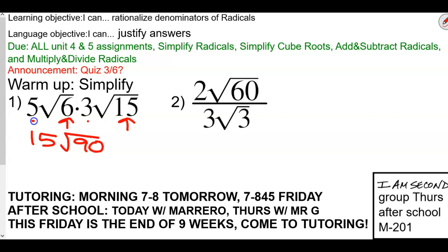Right, inside times the inside. Now, can we break it down? Ninety — always start with two. Two times forty-five. Two does not go into forty-five, so let's try three. Three times fifteen, and then fifteen also breaks down into three times five.